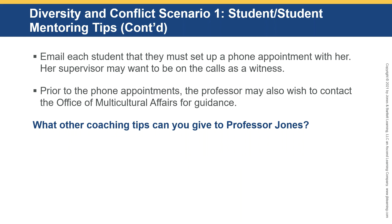Email each student to set up a phone appointment with the professor — her supervisor may want to be on the calls as a witness. If there is a judicial affairs office within the university, this might be an opportunity to ask someone from that office to sit in as well. Prior to the phone appointments, the professor may also wish to contact the Office of Multicultural Affairs for guidance on rules of thumb that office would recommend. What other coaching tips can you give to Professor Jones? Take a moment and jot them down.